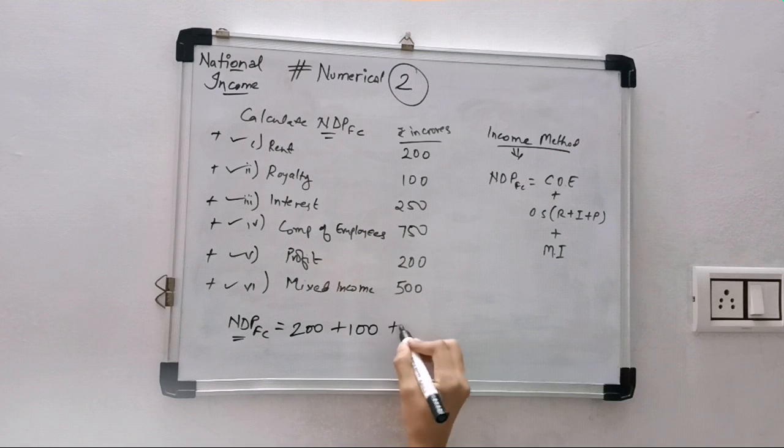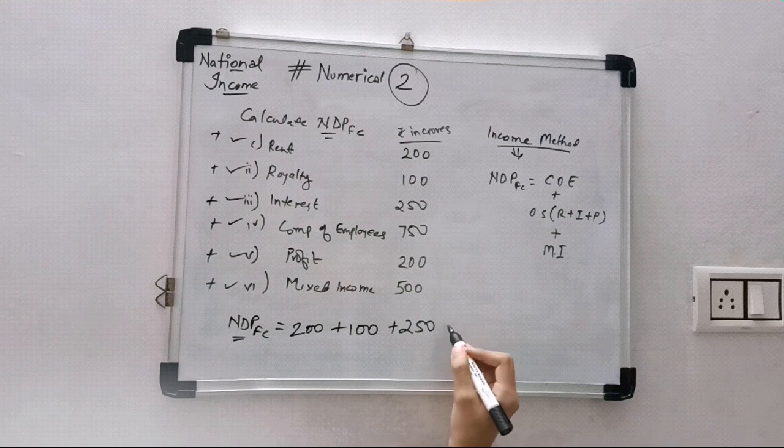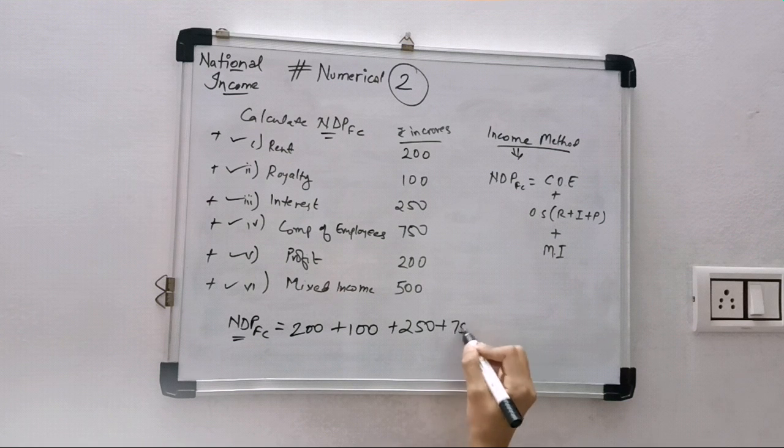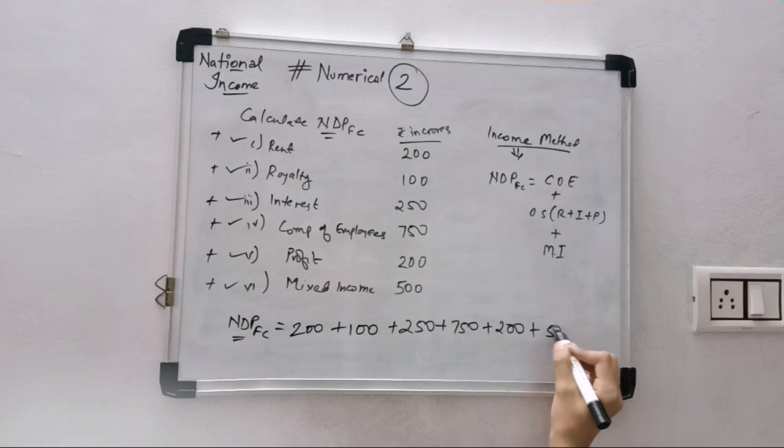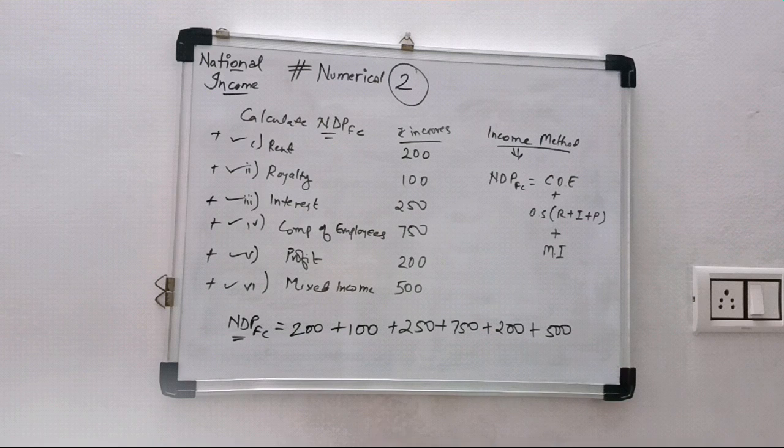100, interest 250, compensation of employees 750, profit is 200, mixed income is 500. If you want to present in another manner, so you have to first write this formula.